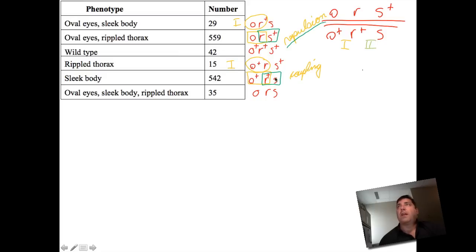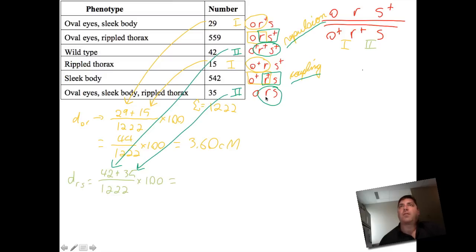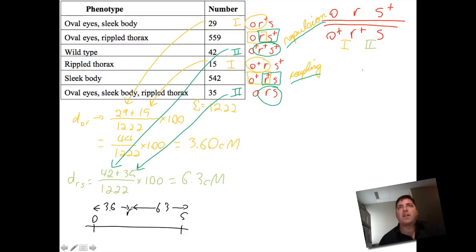If we look at region two, the parentals start out in repulsion, and the recombinants in that region are going to be in coupling, as you see in the graphic. Taking the formula and adding 29 and 15 — those two numbers came from those two classes — you find out you've got 3.6 centimorgans. If we want to find the distance from rippled to the striped thorax, do the same kind of thing, throw in the crossovers for region two, and you're going to get 6.3 centimorgans. So the map you draw should have 3.6 and 6.3, and that's going to be the proper gene map we get from this organism. We can't do double crossover correction.